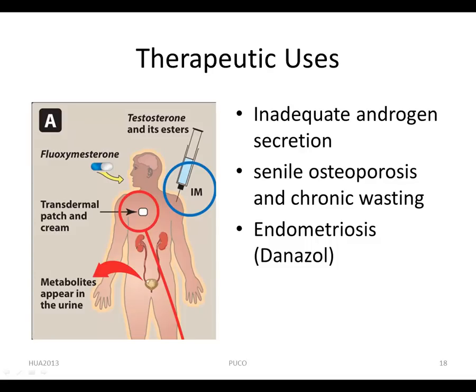As an unapproved use, anabolic steroids are used to increase lean body mass, muscle strength, and endurance in athletes and bodybuilders.